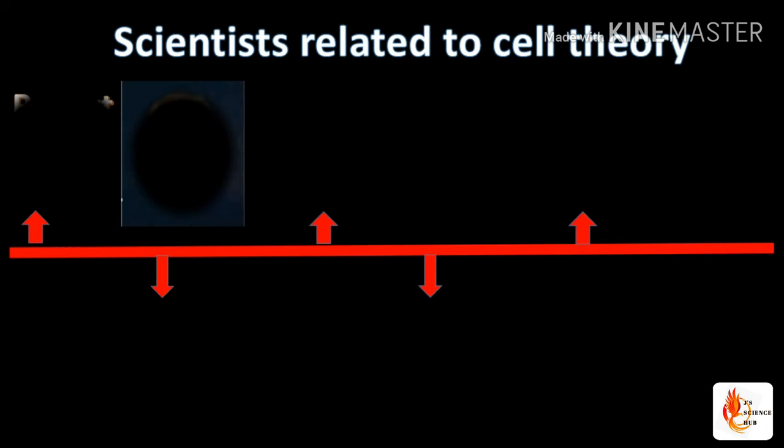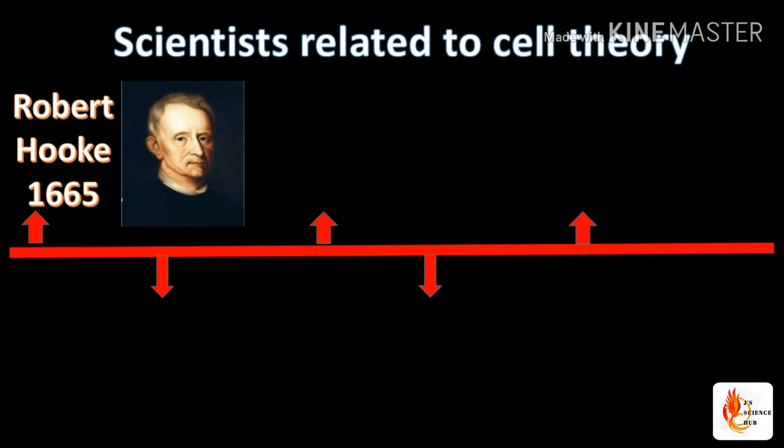There are five scientists related to cell theory. Two of them put the basic foundation for the formation of cell theory, and the rest three made the cell theory. Robert Hooke is the scientist who first observed the cell.